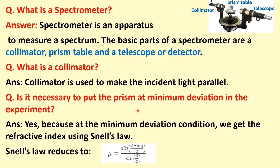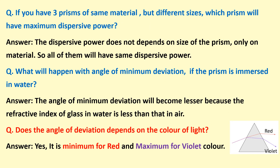Is it necessary to put the prism at minimum deviation in this experiment? Yes, because at the minimum deviation condition we can find the refractive index using Snell's law, which reduces to the formula mu equals sin((A + delta M)/2) divided by sin(A/2). Using mu 1 over mu 2 equals sin theta 2 over sin theta 1, we find mu and then the dispersive power omega.